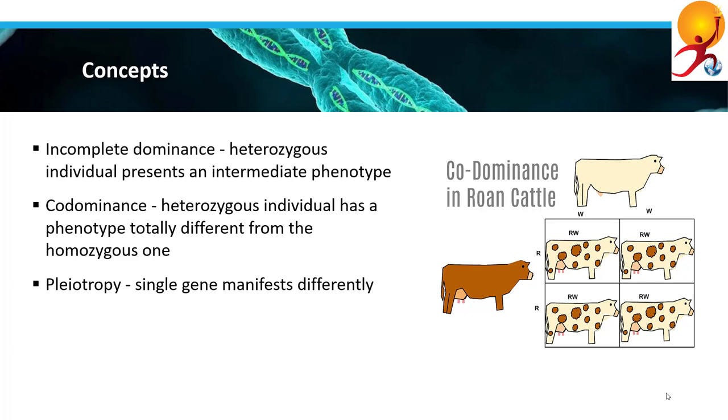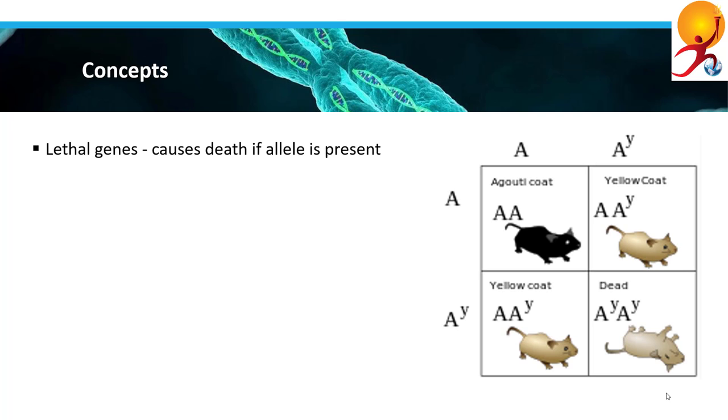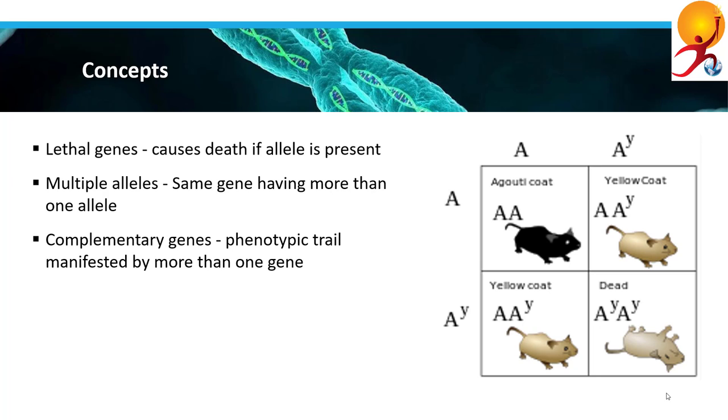Next is pleiotropy. Pleiotropy is when a single gene manifests in several different phenotypical traits. We also have lethal genes with at least one allele that, when present in the genotype of an individual, can cause death. These are recessive lethal alleles and dominant lethal alleles. There are also multiple alleles. Multiple alleles is when the same gene has more than two different alleles. In normal Mendelian inheritance, the gene only had two alleles. In multiple alleles, relative dominance among the alleles may exist. A common example would be alleles in the ABO blood group in which there are three alleles: IA, IB, and i. IA is dominant over i which is recessive in relation to IB. IA and IB lack dominance between themselves. There are also complementary genes where a phenotypic trait is manifested by two or more genes.